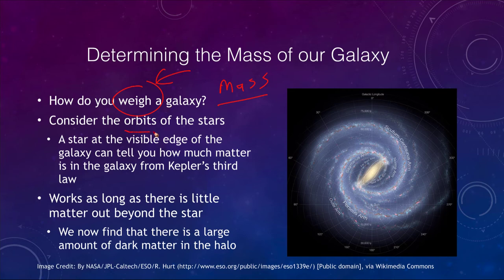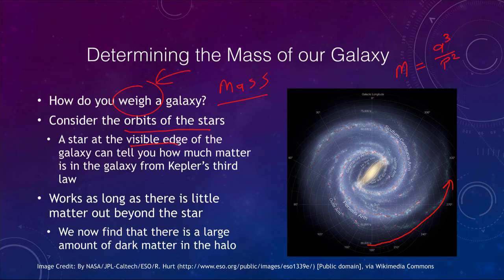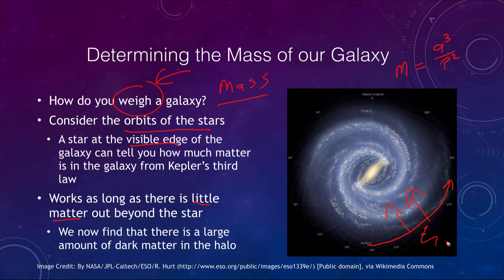One way to do this is to consider how the stars are orbiting. If we look at a star at the visible edge of a galaxy, that can tell us how much matter is within the galaxy based on Kepler's third law. We can use Kepler's law, which tells us that mass equals a³ over p², so the mass of the galaxy in solar masses inside that orbit equals the semi-major axis in astronomical units cubed, divided by the period in years squared. This works as long as there is very little matter outside beyond that star.